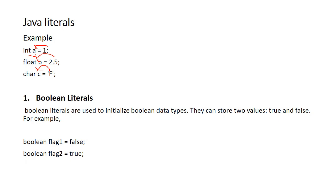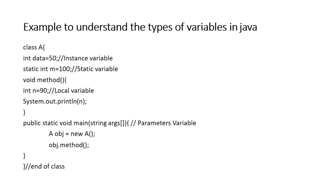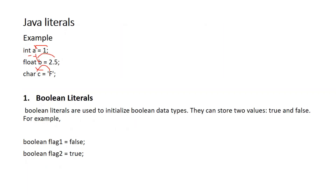We can use boolean data types to store two values: true and false — these are boolean literals. For example, boolean flag = false and boolean flag = true.